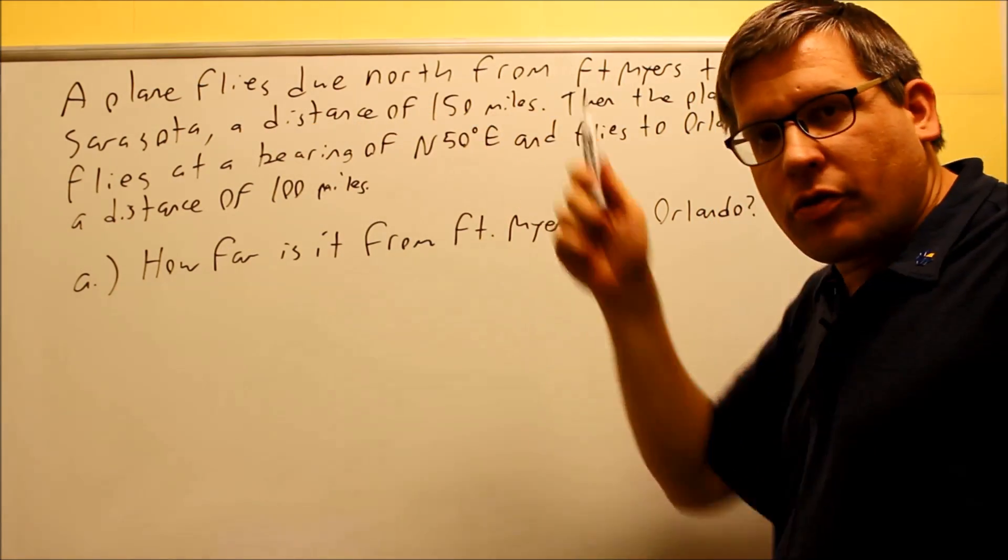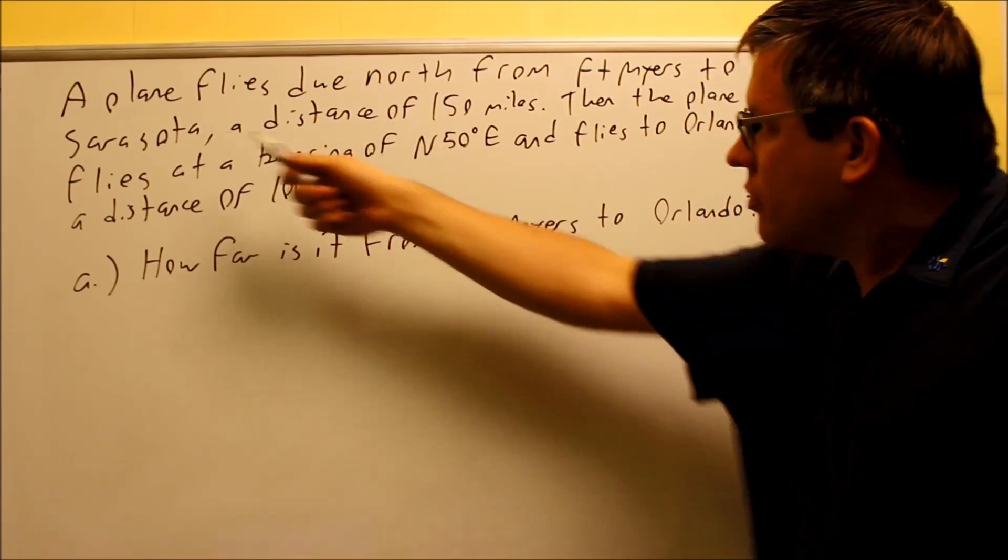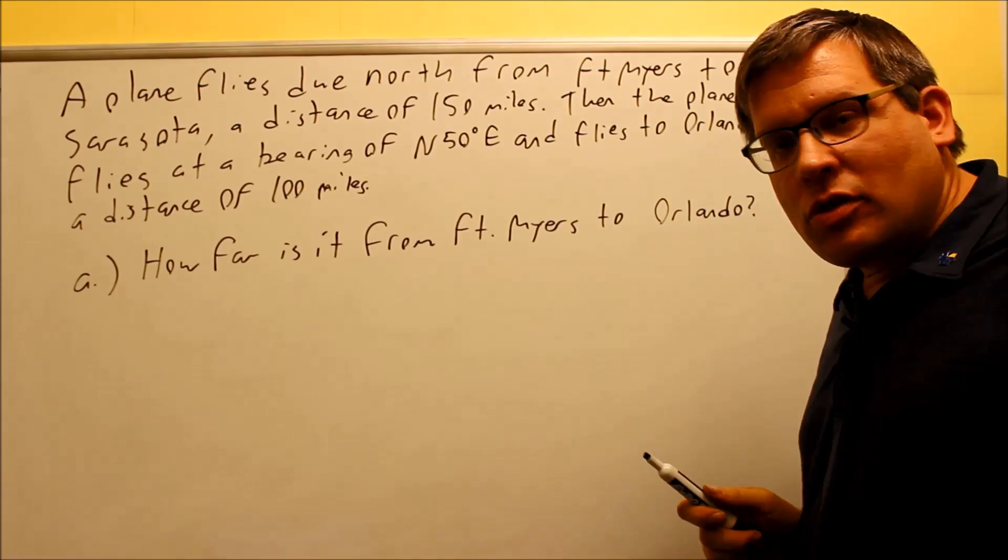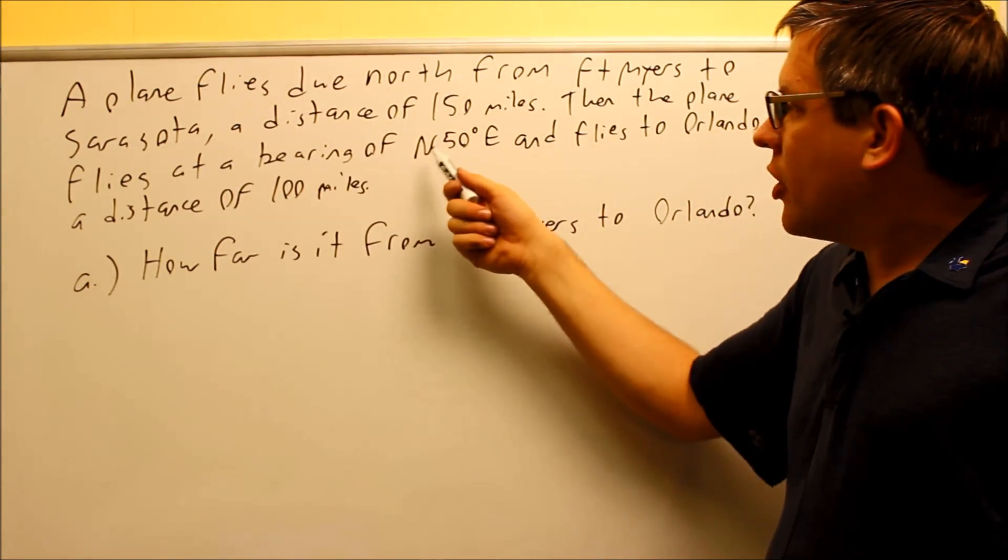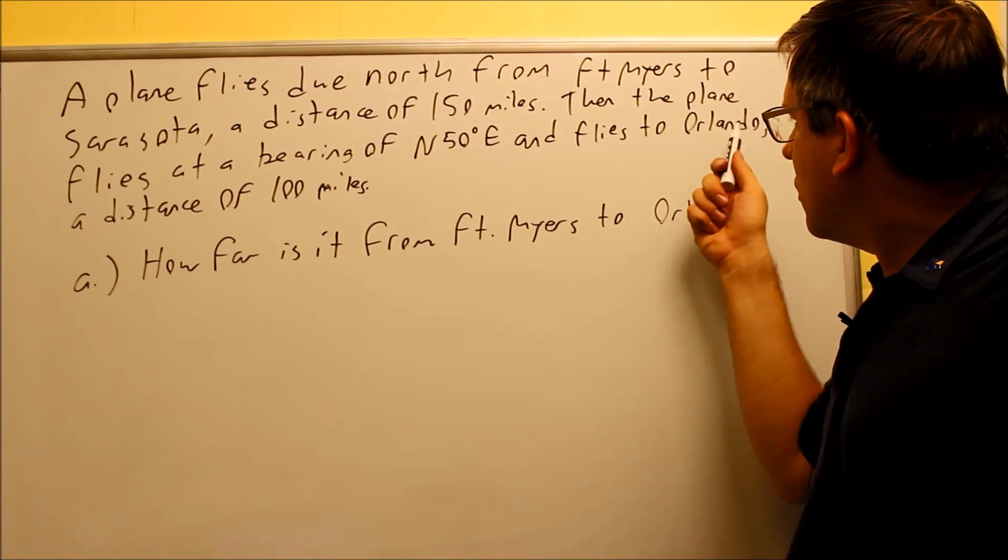A plane flies due north, so straight north, from Fort Myers, Florida to Sarasota, and that's going to be a distance of 150 miles. Then the plane turns or flies this new bearing north 50 degrees east, and then it's going to fly in that direction to Orlando.